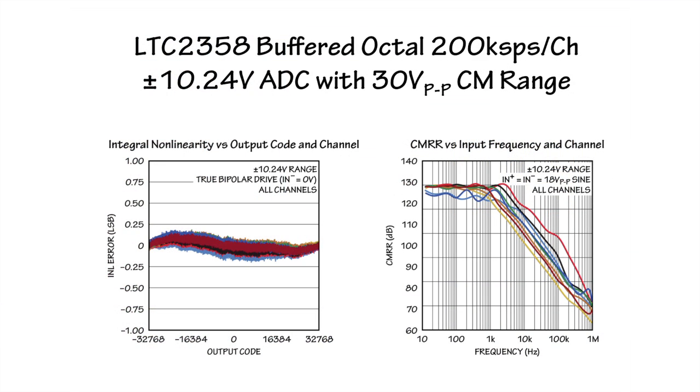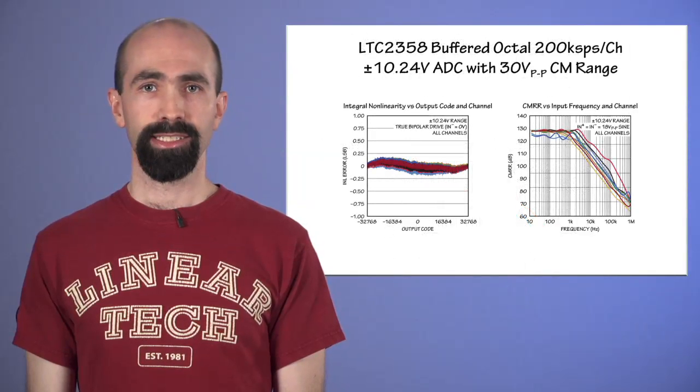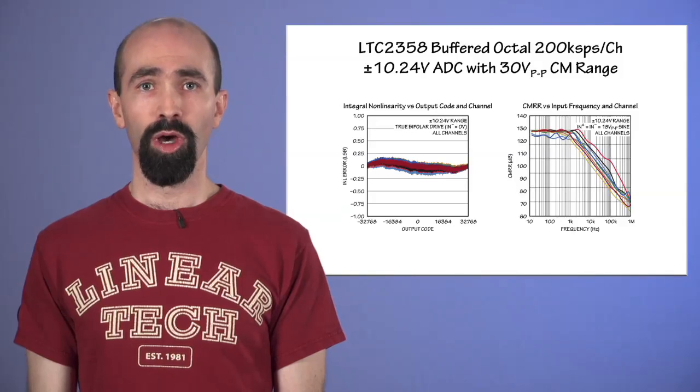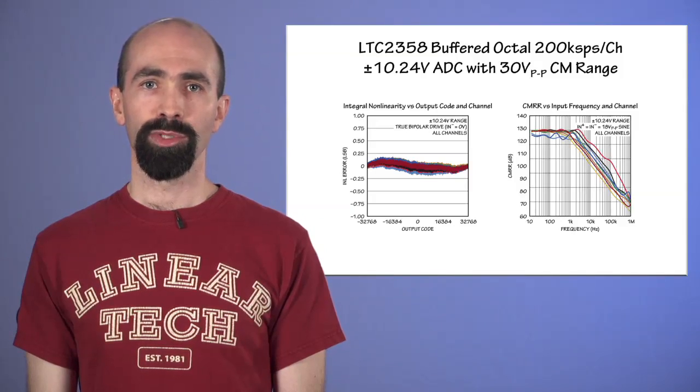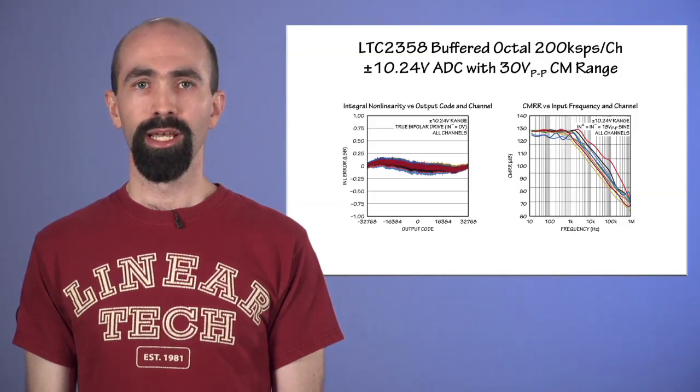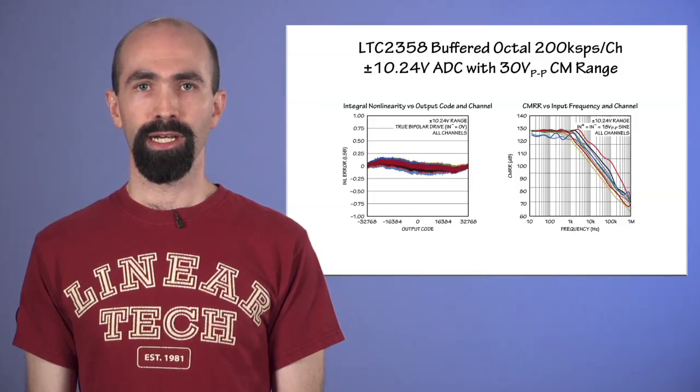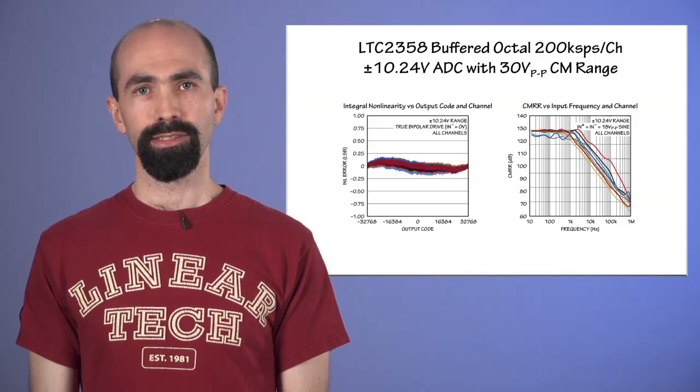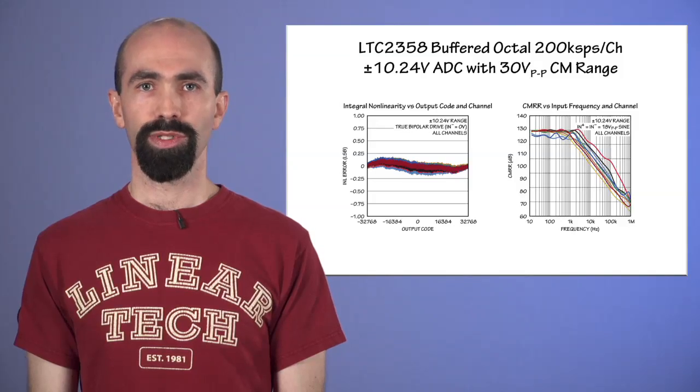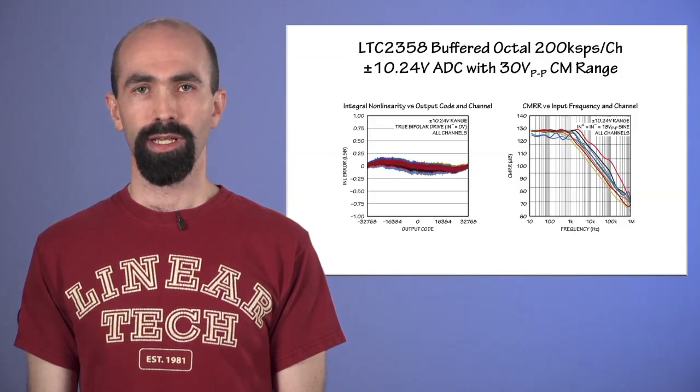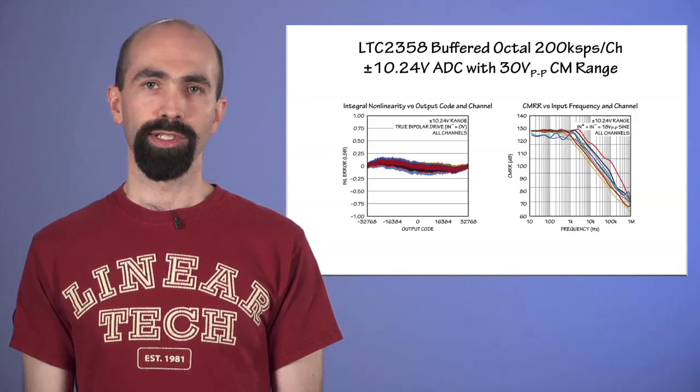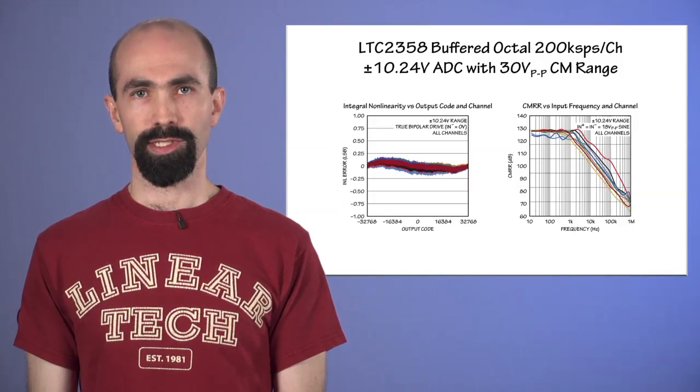In essence, we've taken the leading performance and outstanding flexibility of our LTC-2348 octal successive approximation ADC and added high-performance FET input buffering. In the LTC-2348 product video, we discussed how its outstanding performance and arbitrary input measurement capability make it an excellent choice for many high-voltage applications. The LTC-2358 shares these advantages with nearly identical performance. Now though, I'd like to focus on some simple ways its buffered inputs can improve your system.